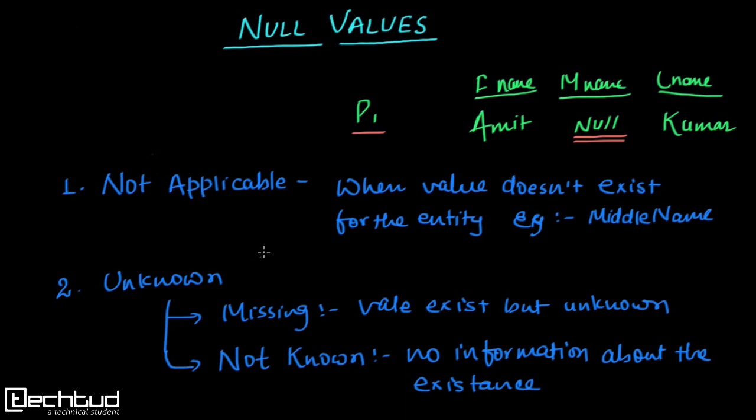We have various cases where we can have null value. The first one is not applicable. This is the case when, let's say, for a person middle name is not applicable. Personally, I don't have a middle name. So that will be the case of not applicable, where that particular attribute is not applicable for that entity.